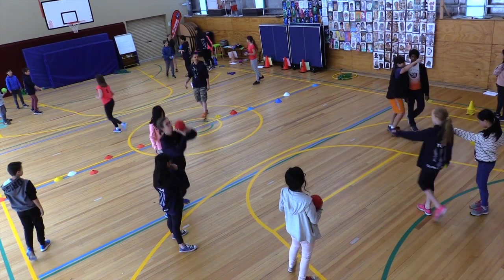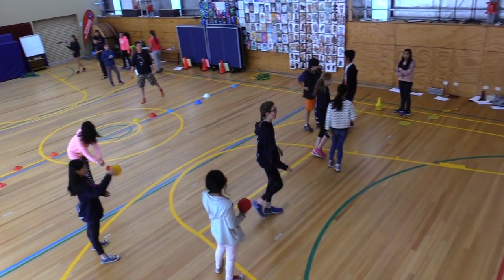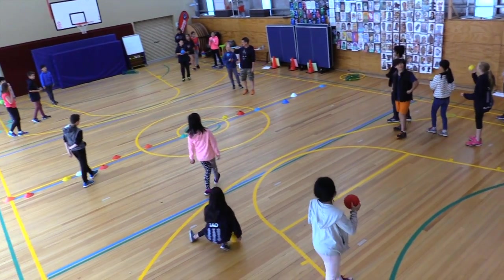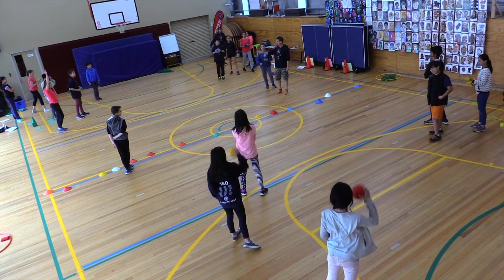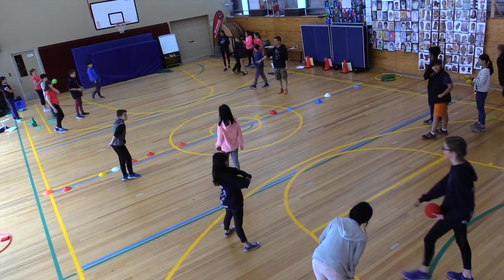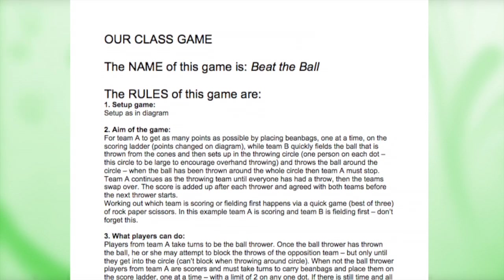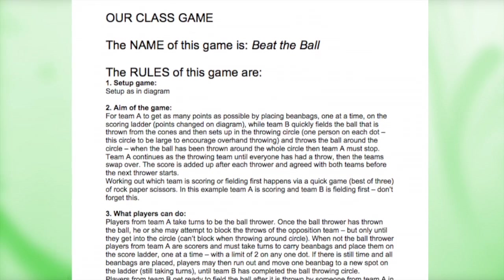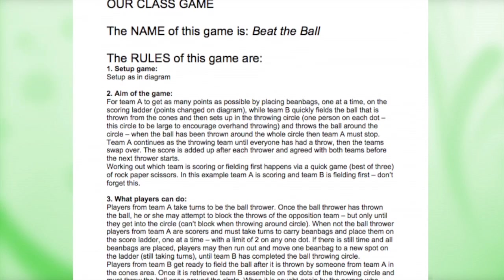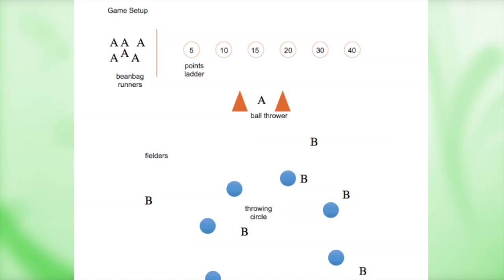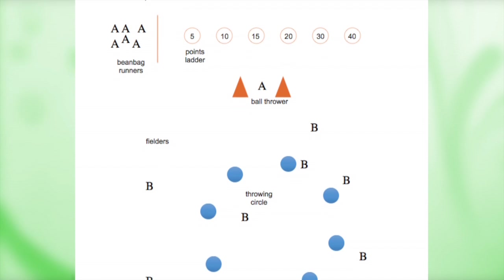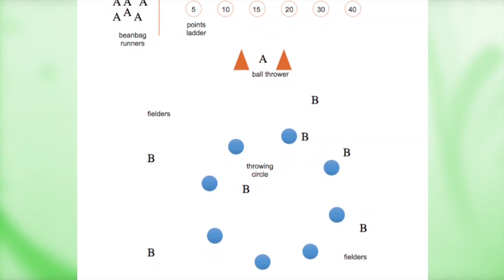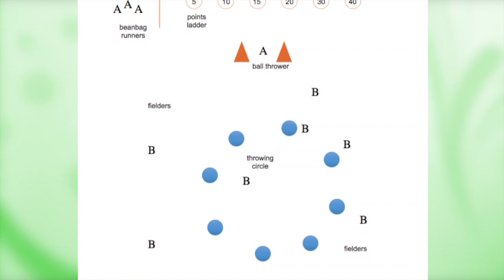The four teams are involved in two games, all playing the draft version of the class game, which they will provide feedback on and amend as a class supported by the teacher. This is an example of a composite class game, constructed by the teacher from parts of each team's game and then further developed through feedback from the whole class after trying draft versions. The layout for explaining the game is the same as that students use to teach their games to each other in teams.